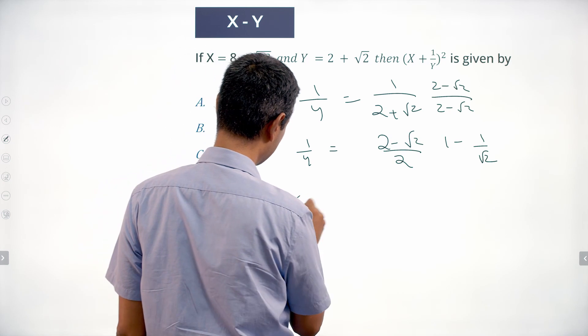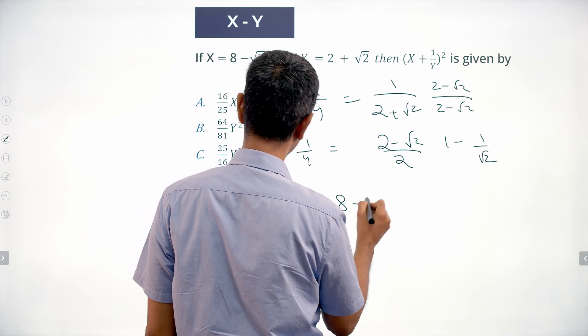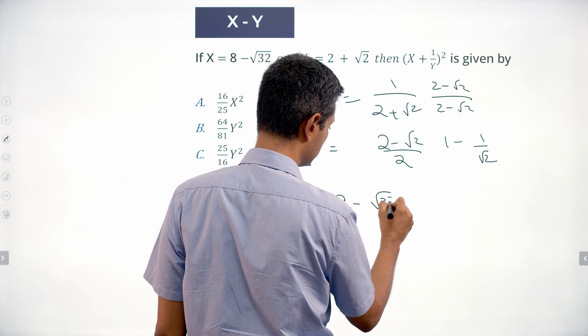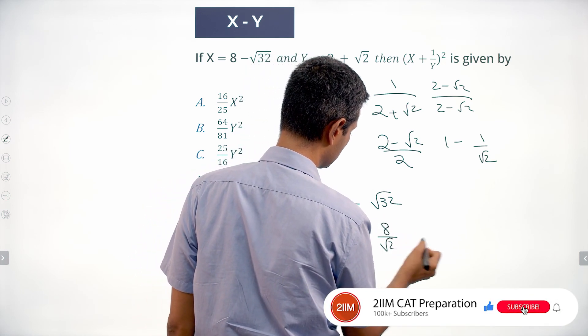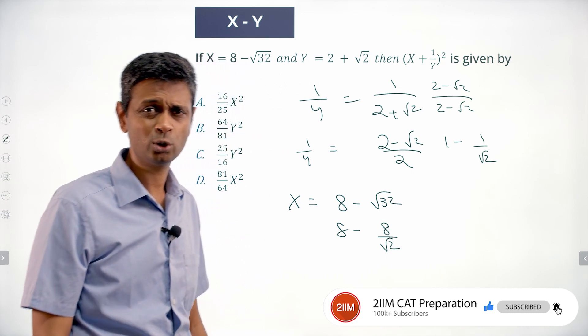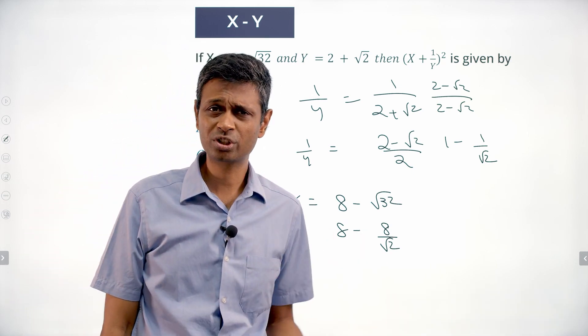x is 8 minus root 32, or 8 minus 8 by root 2. Root 32 is root 64 by 2. Root 64 is 8.